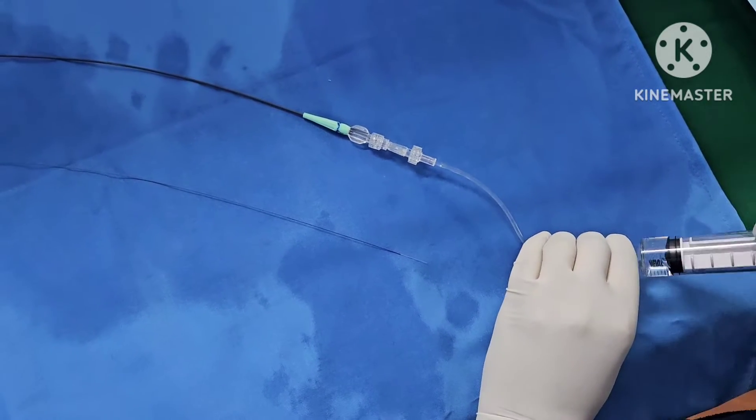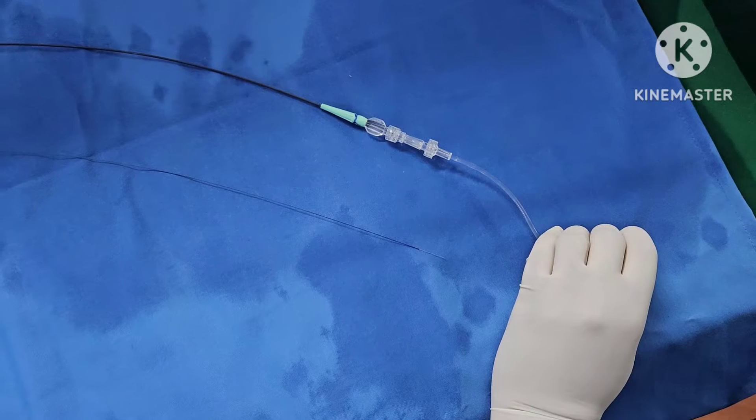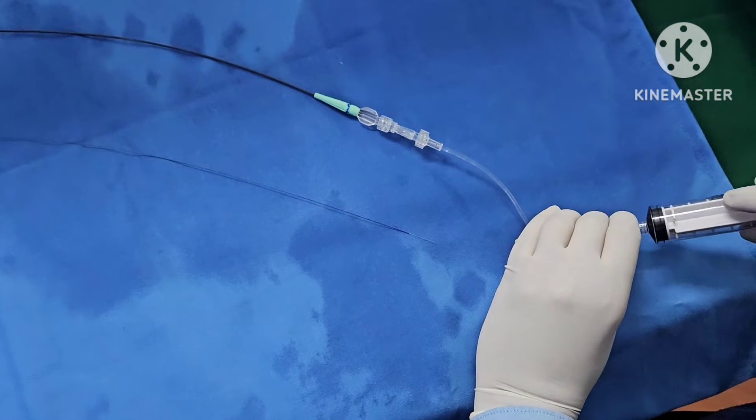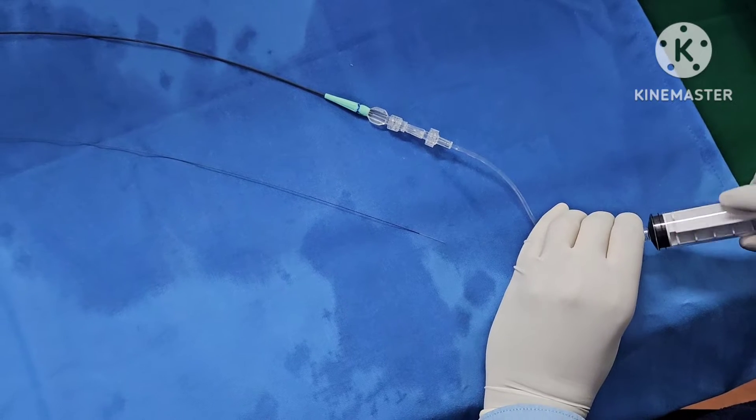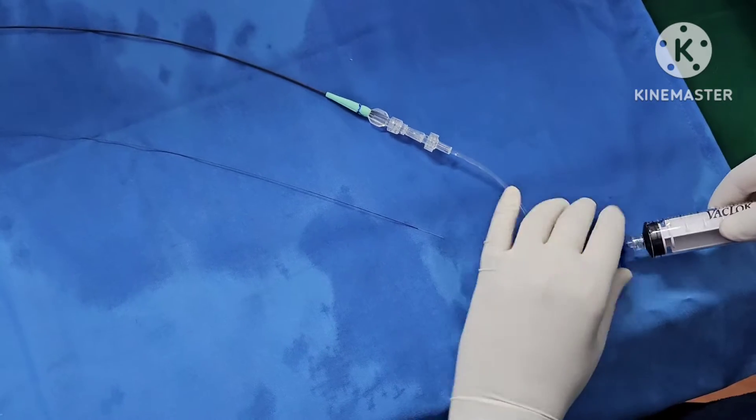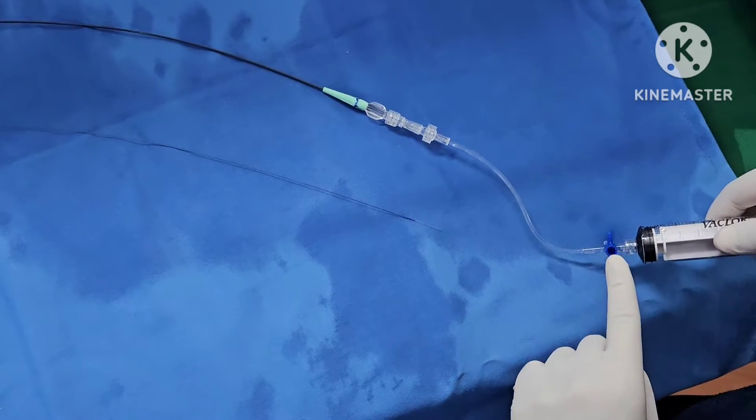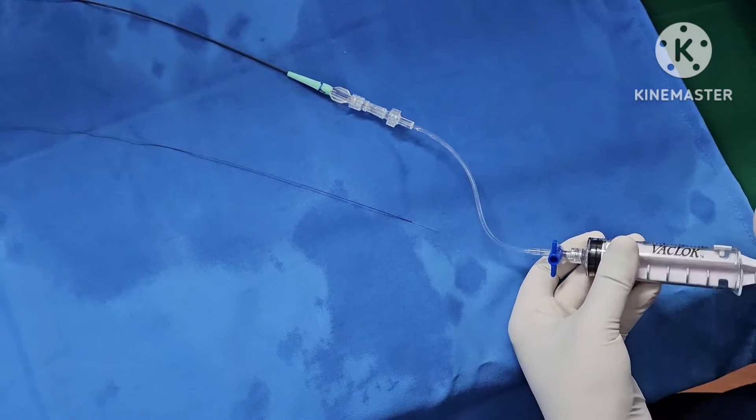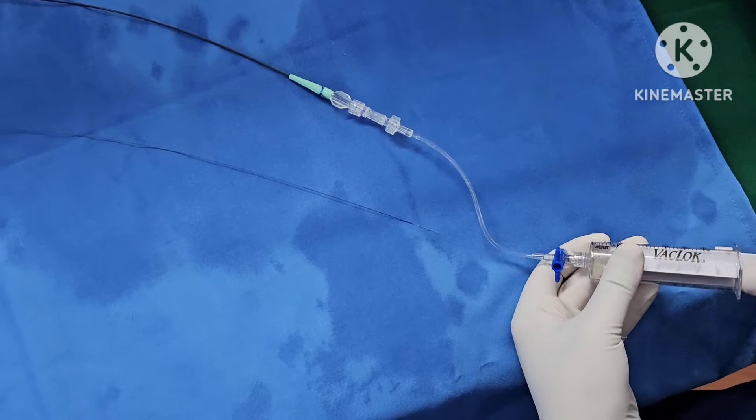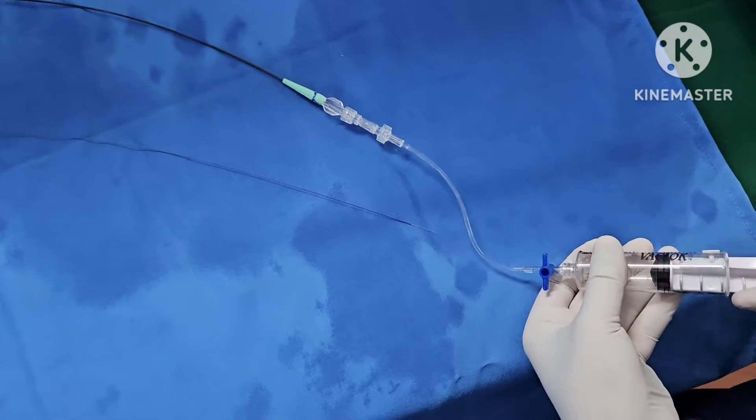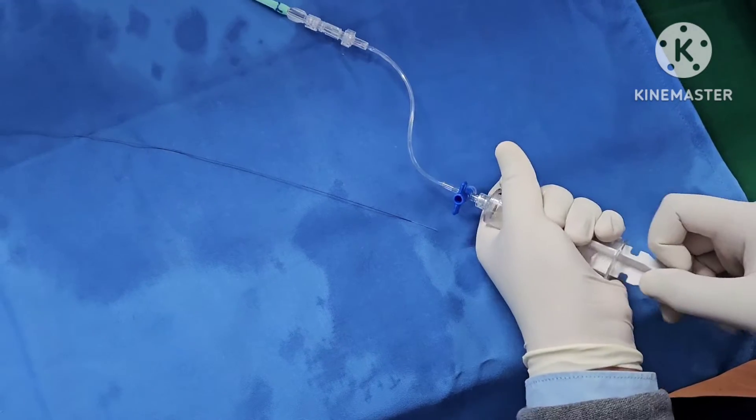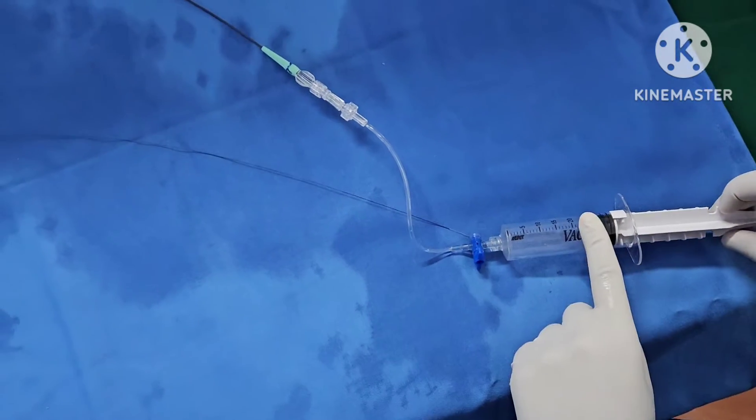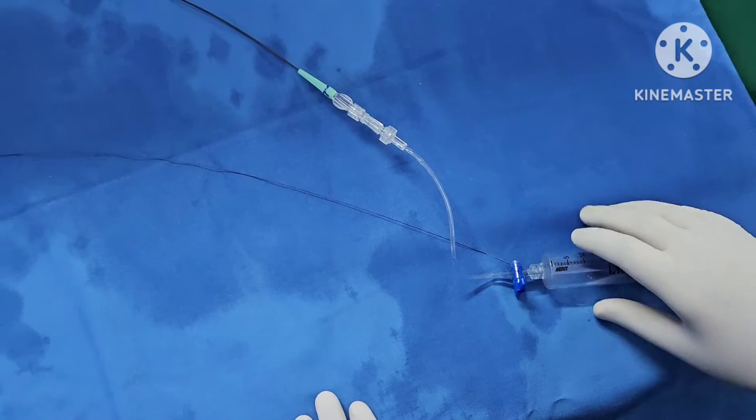And we will flush this whole thing keeping the stopcock open like so. After that, just for the sake of demonstration, we will take a syringe, this thrombus aspiration syringe, and we will put the stopcock to close and we will put it on negative pressure like so. Takes a lot of effort and already done that.